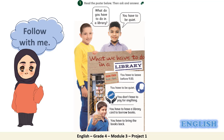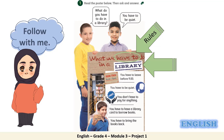Now, follow with me step by step. Look at the title and read with me: What do we have to do in a library? Look at 'have to.' When do we use it? Do you remember? We use it to talk about rules, and to talk about rules in a place. What is that place? As you can see in the title, it's the library.